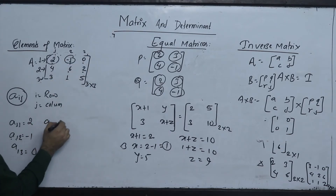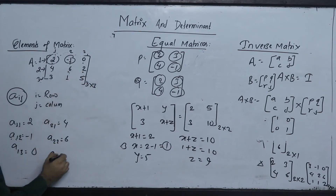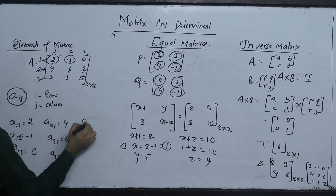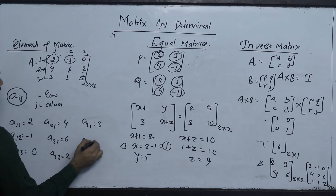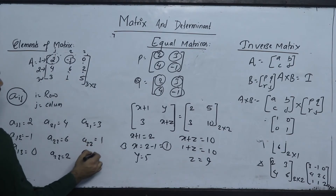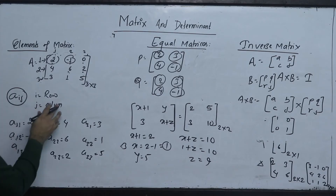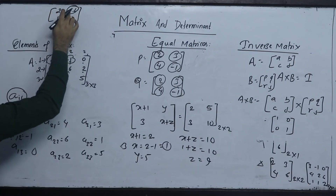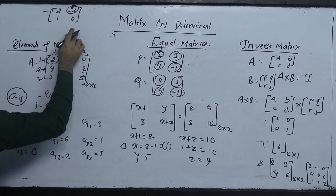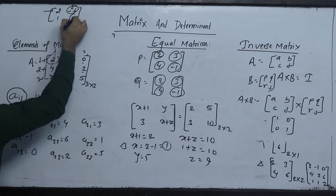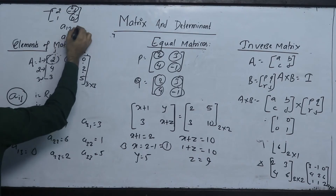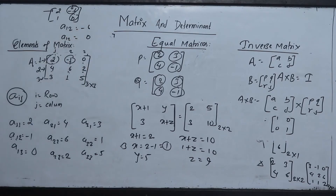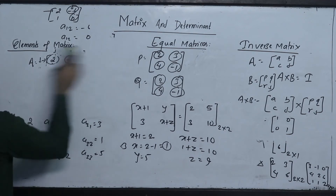A21 equals 4, A22 equals 6, A23. Then A31, A32, A33 with values such as 5, 9, 2 for the respective positions in the matrix.